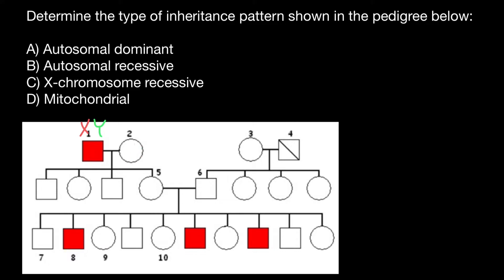But what about this female? Her genotype can be two normal X chromosomes. As you see, in the following generation, none of the children have this genetic disorder. But in the next generation, we see that 50% of the males have this genetic disorder.